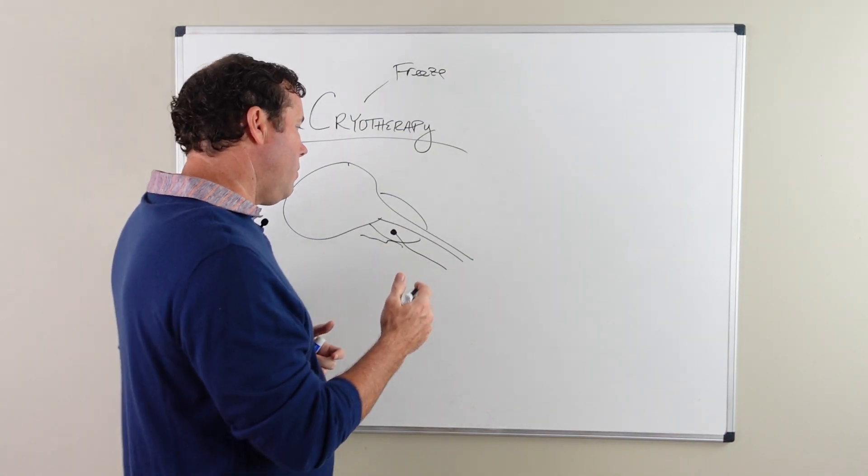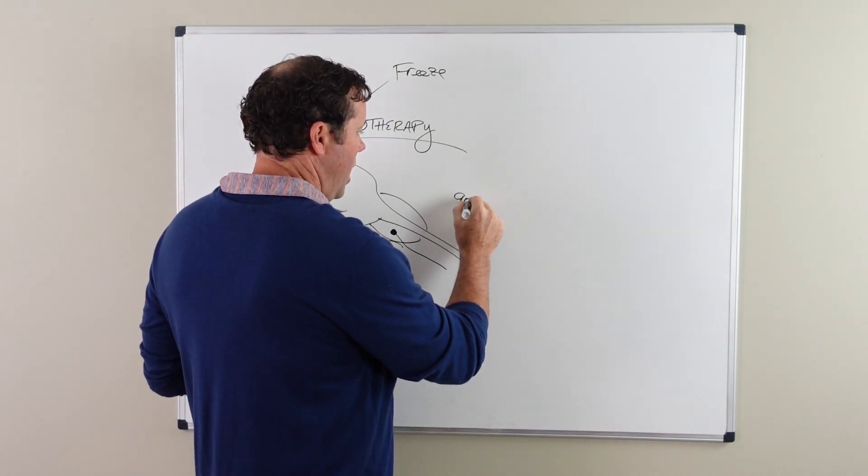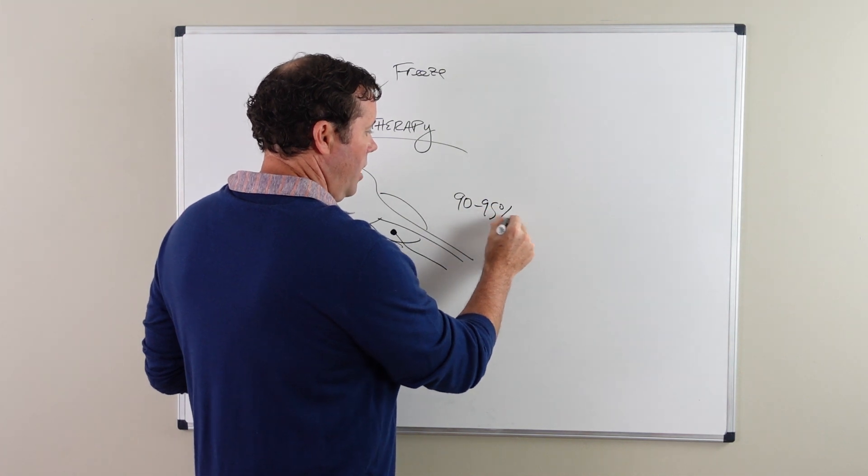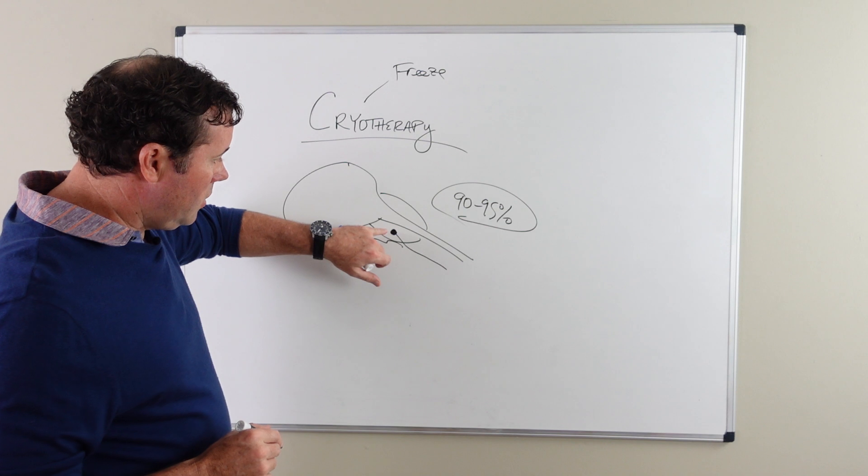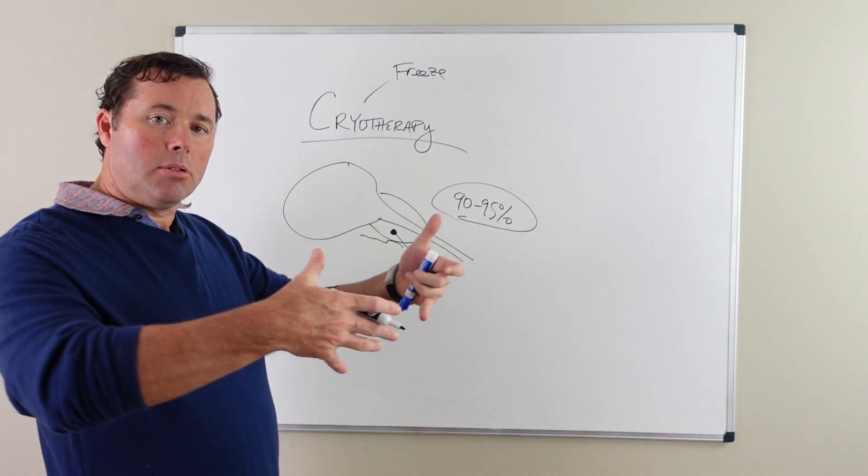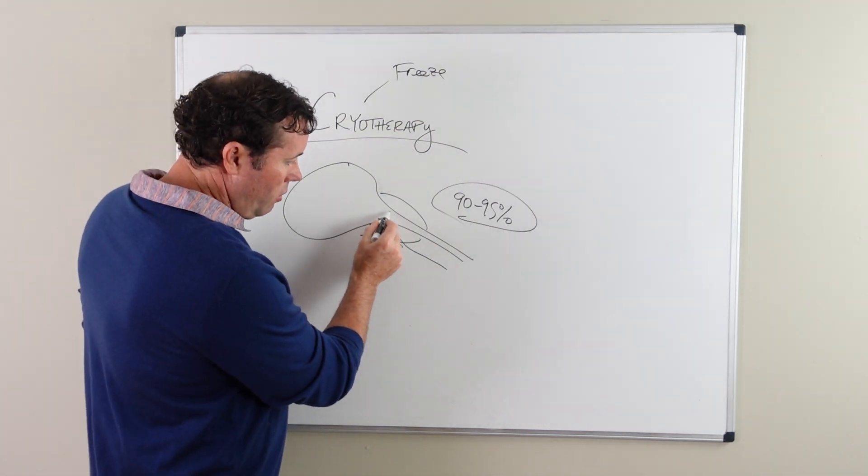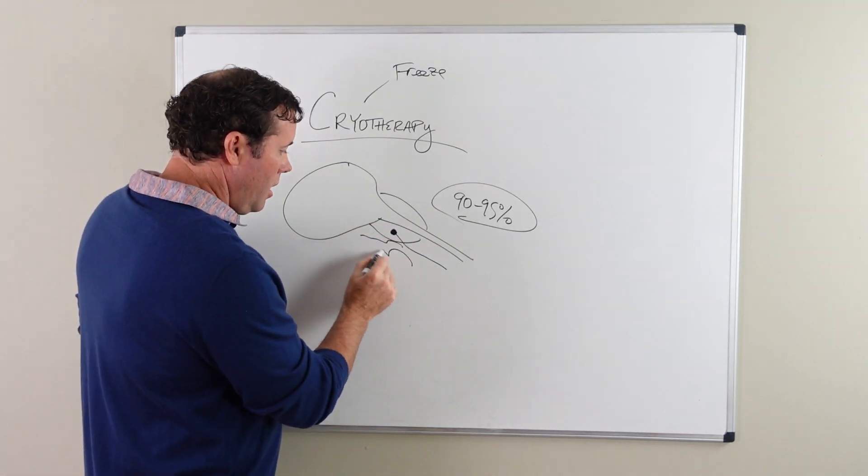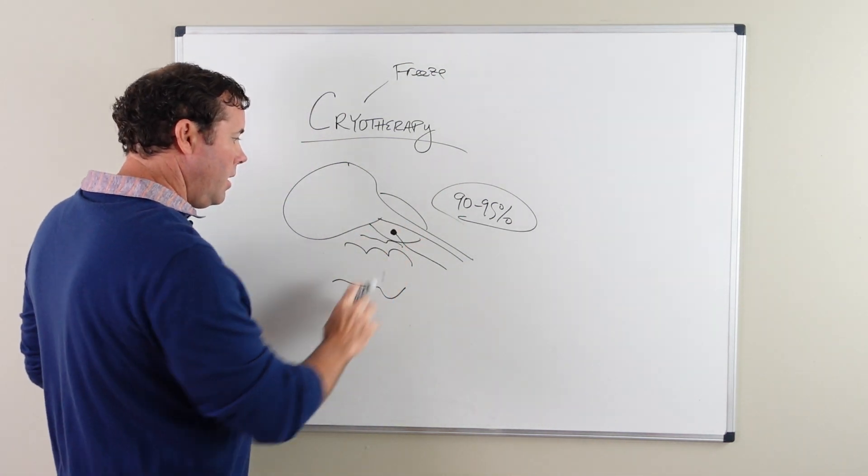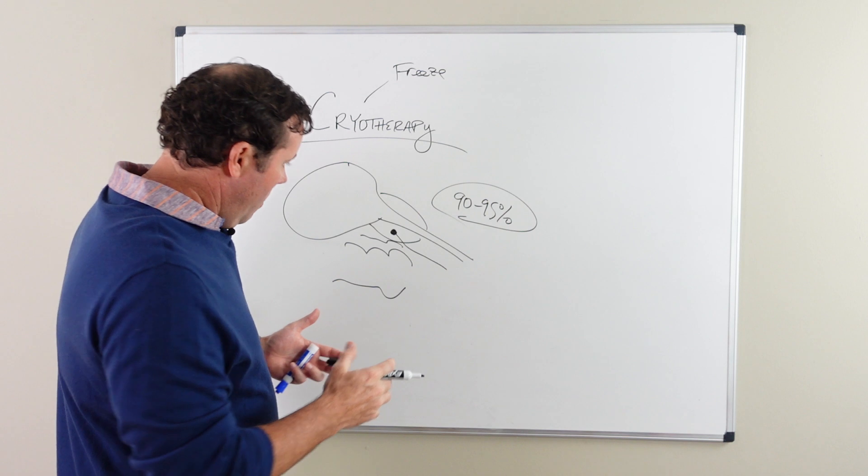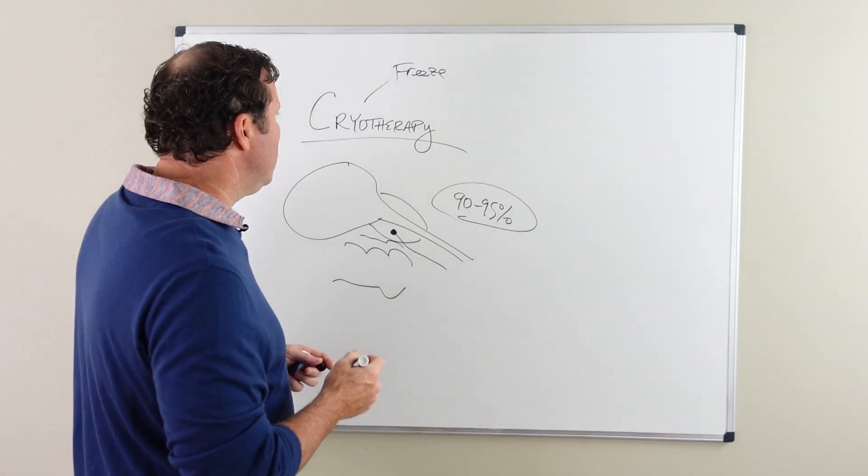And so the rate of erectile dysfunction is somewhere between 90% to 95%. It's very high because of the difficulty in controlling that ice ball formation. Yes, there is a urethral warmer that's placed and there's a rectal probe that's placed to monitor the temperatures of these areas. But still, the erectile dysfunction rate is still very high.